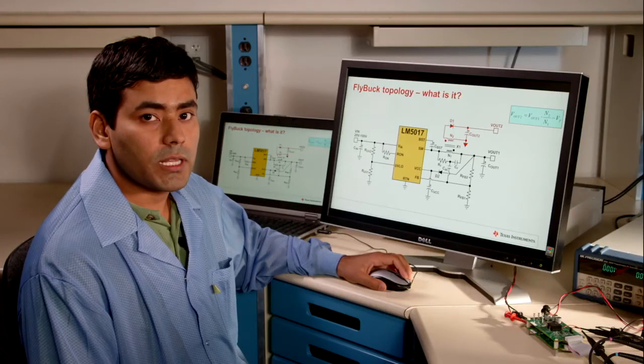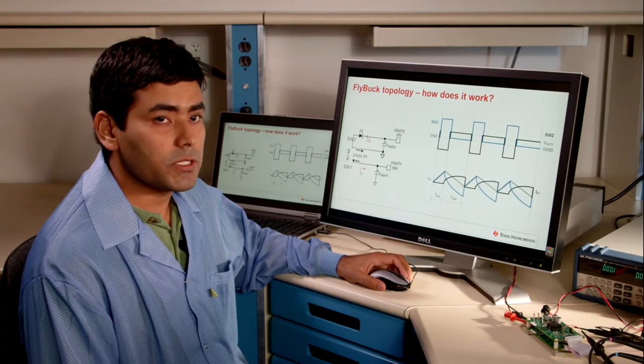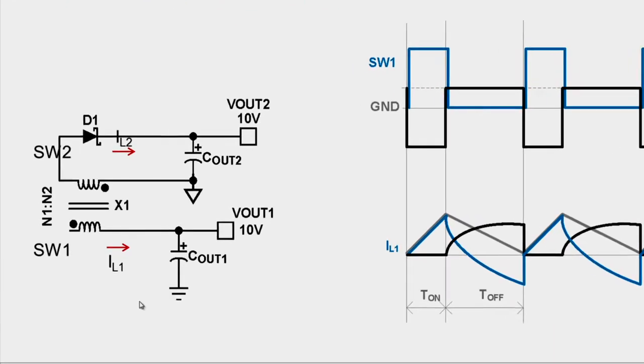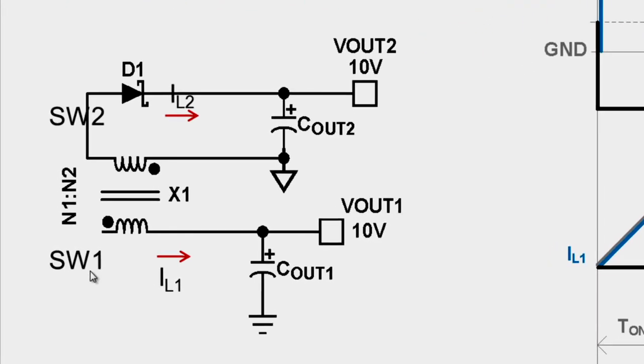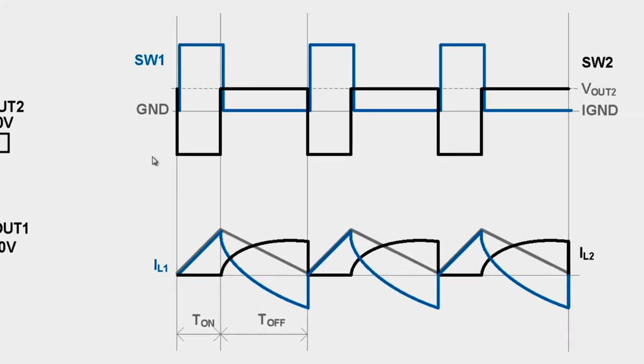In the next few slides, we will explain the operating principle of a FlyBuck Topology. In this picture on the left hand side, we have the output power stage of a FlyBuck converter, which shows the switch nodes 1 and 2, the coupled inductor, and the output capacitors Cout1 and Cout2. On the right side are the operating waveforms of a FlyBuck converter. On the left side vertical axis, we have the quantities for the primary side of the converter, switch node 1 and inductor current L1.